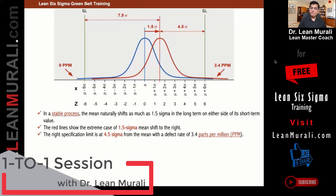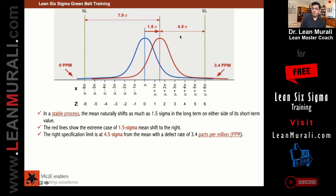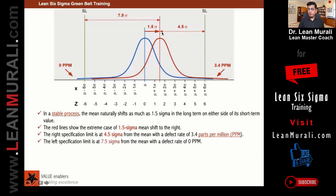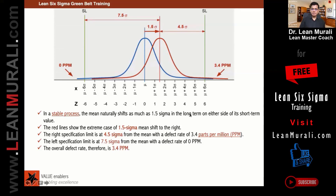After this shift — if it has shifted to the right — you still have 4.5 sigma here, then it is 3.41 parts per million. Once it has shifted to the right, the left side is 7.5 sigma, so on the left side there will not be any defectives. On the right side, you will still have 3.41 parts per million.